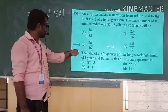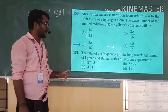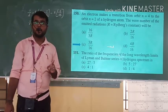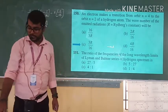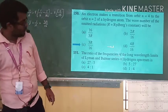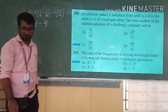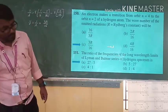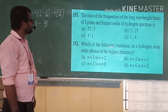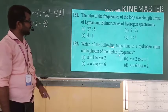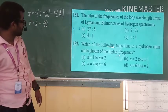The ratio of the first line of Lyman series to the first line of Balmer series gives the answer as 27:5.